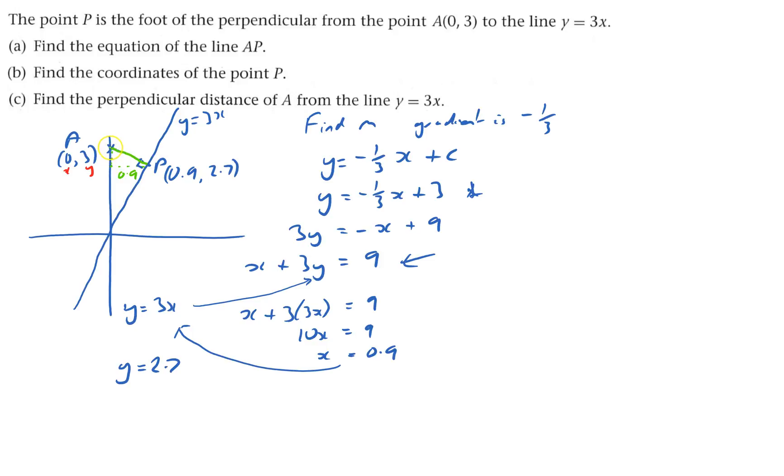And this one here goes from 3 down to 2.7. So that's 0.3. So distance is the square root of 0.3 squared plus 0.9 squared, which equals the square root of 0.09 plus 0.81, which equals the square root of 0.9. You could put roughly what it equals. But I see you haven't got a calculator. So that will do.